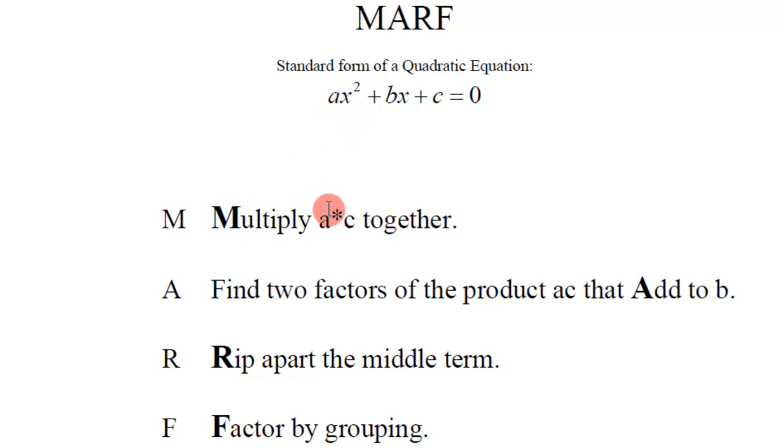You're supposed to multiply the A and C together, the leading coefficient and the constant term, to make a product. That's step one.